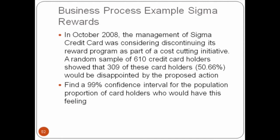This is a business process example. In October 2008, management of Sigma credit card was considering discontinuing its reward program as part of a cost cutting initiative. A random sample of 610 credit card holders showed 309 of these holders would be disappointed by the proposed action. 309 divided by 610 is 50.66%. Find 99% confidence interval for population proportion of card holders who would have this feeling.